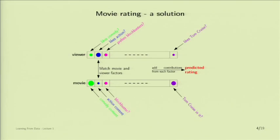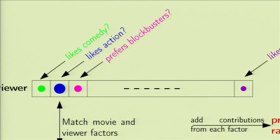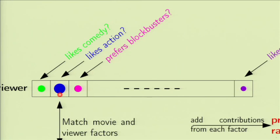Let me give you a solution to the movie rating problem to start getting a feel for it. We're going to describe a viewer as a vector of factors — a profile. The first factor might be comedy content: does the movie have a lot of comedy, and does the viewer like comedy? Does the viewer like action? Do they prefer blockbusters or fringe movies? You can go on all the way to whether you like the lead actor.